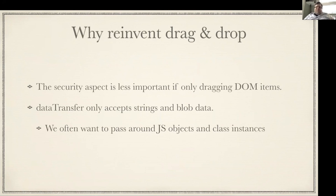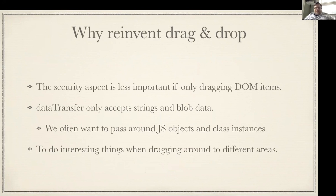The data transfer in native APIs only takes strings and blobs. So if you want to take JavaScript objects, class instances, things with functions, things that are bound to other data elsewhere, you're kind of out of luck in the native thing — you'd probably want to do something a little bit richer for data. And if you want to do anything interesting while you're still in the middle of a drag process, especially considering the kind of data you want to drag around, the native API is not going to let you do that. Canvas is actually a really good reason to reimplement things, for reasons I pretty well demonstrated in the demo.